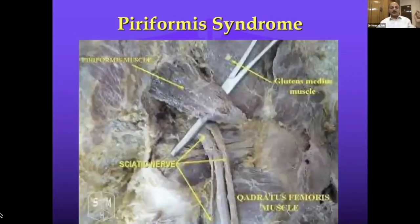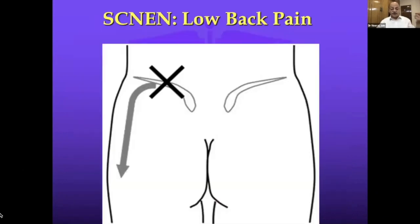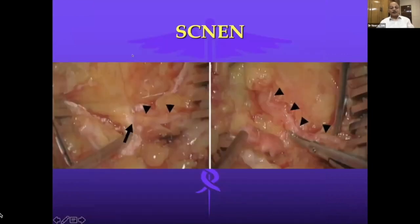Piriformis syndrome causes pseudo-sciatica — it presents like sciatica. Importantly, 33 percent of patients will have an MRI finding of disc disease, which does not mean disc disease is the cause. You must address this correctly. Piriformis injection with steroid gives a good response. There is also cluneal nerve syndrome — not many people talk about it — also called iliac crest syndrome, where there is entrapment of cluneal nerves which are dorsal branches. Ultrasound-guided block works great.